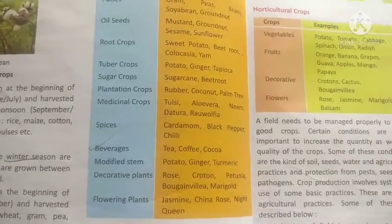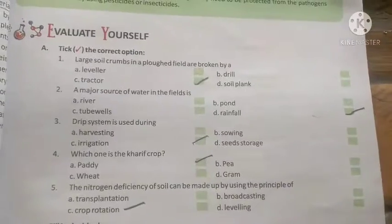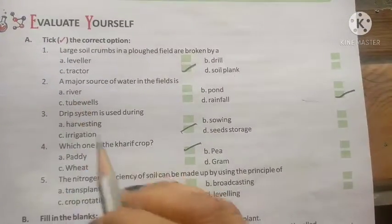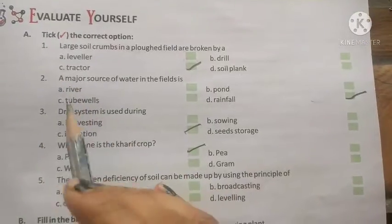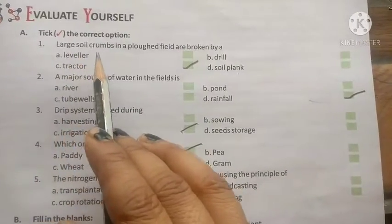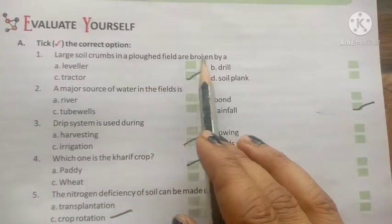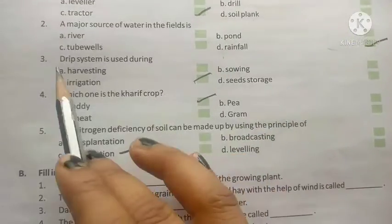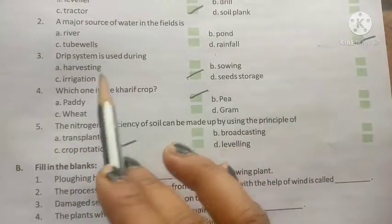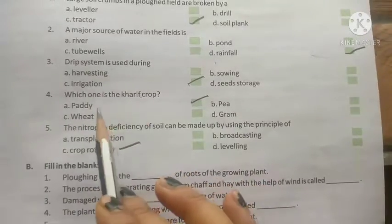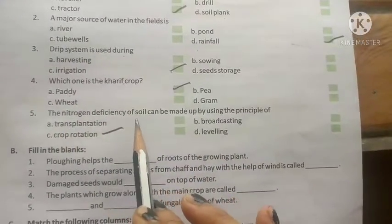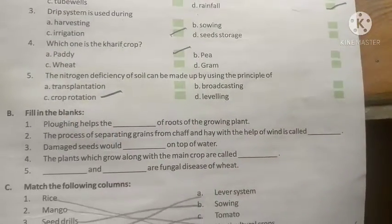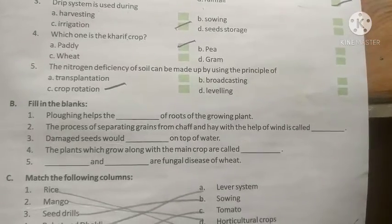Now move to the exercise. Question number one: tick the correct option — write in your copy. The large soil crumbs in a ploughed field are broken by a tractor; the measure of water in the field is rainfall; drip system is used during irrigation; the kharif crop is paddy; nitrogen deficiency of soil can be made up by using the principle of crop rotation.